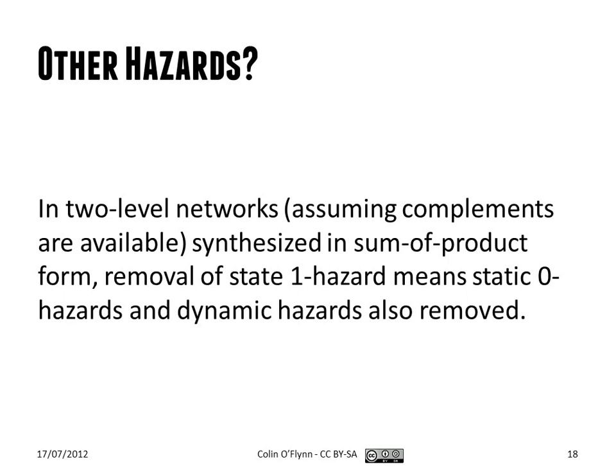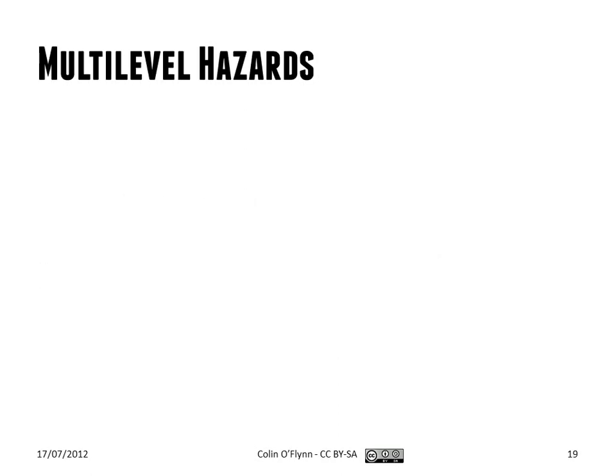And now we have the hazard-free form of the circuit. To find hazards, we just look at the product terms and try to find locations like that, where there's two that aren't covered. So there's an adjacent bit of gap. And then you can implement the circuit there. If we do this process and it's a two-level network, then we can say that removal of those hazards removes other possible hazards, too.